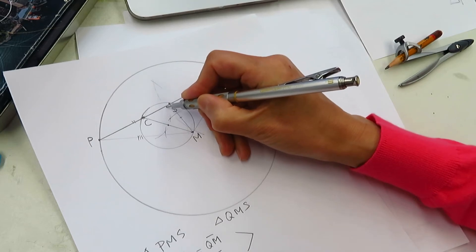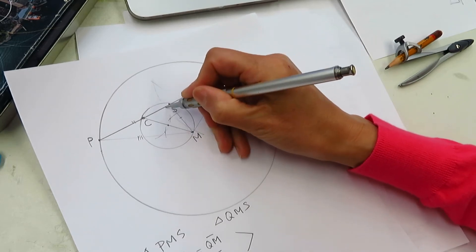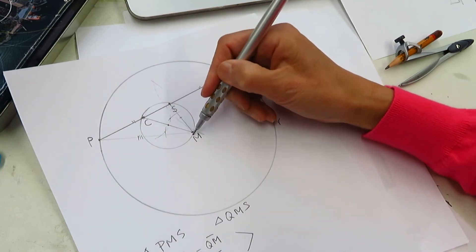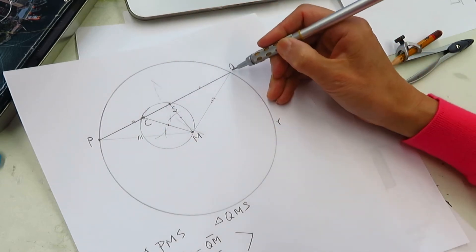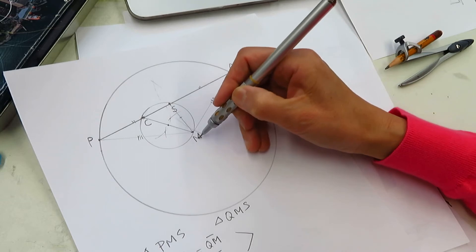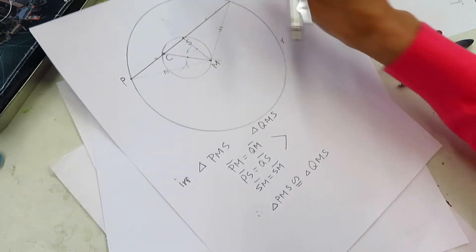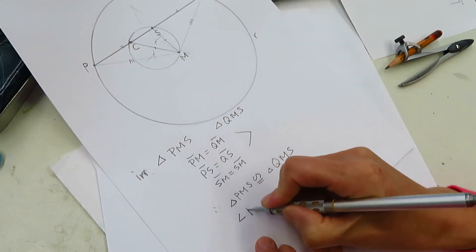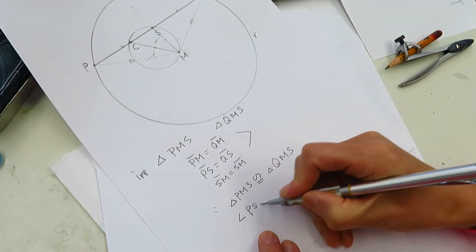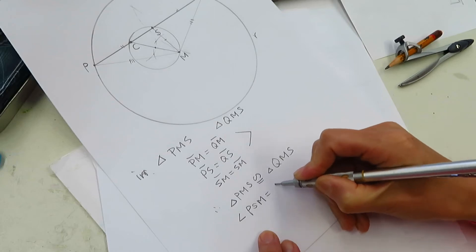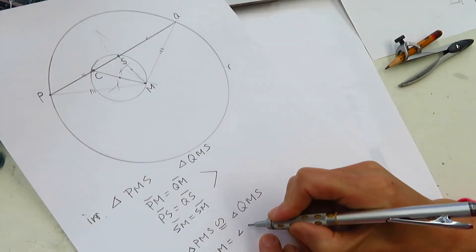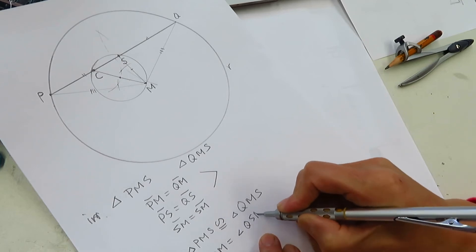So the angle PSM and QSM is the same. Therefore, angle PSM equal angle QSM.